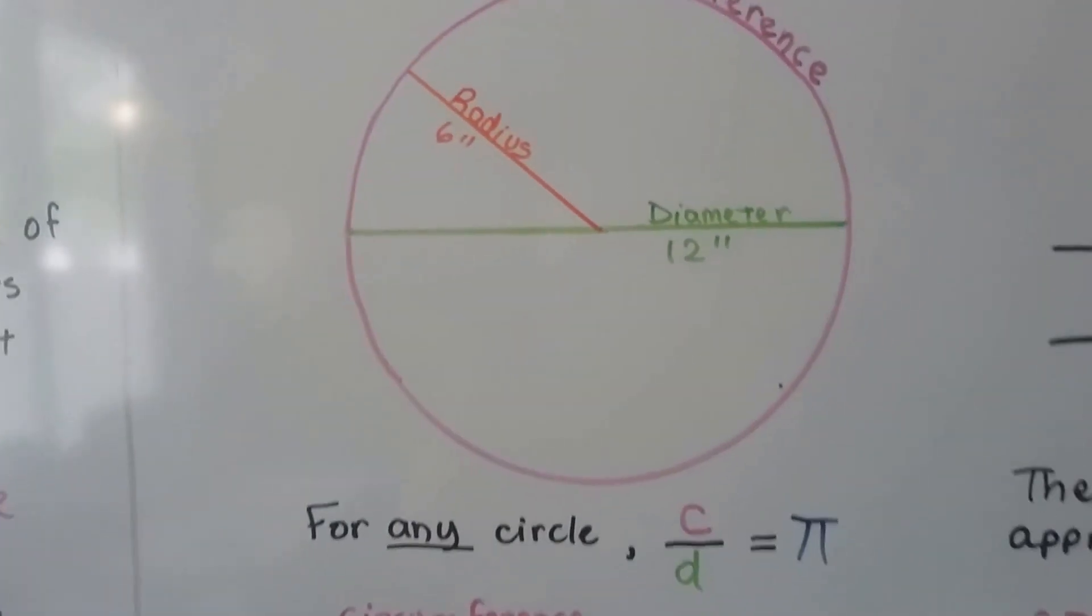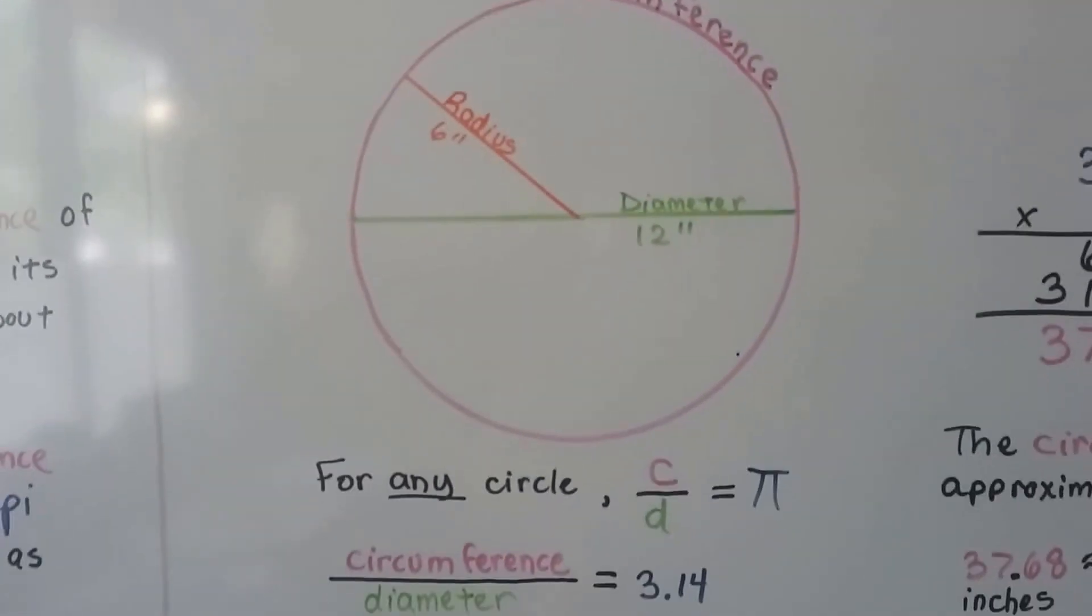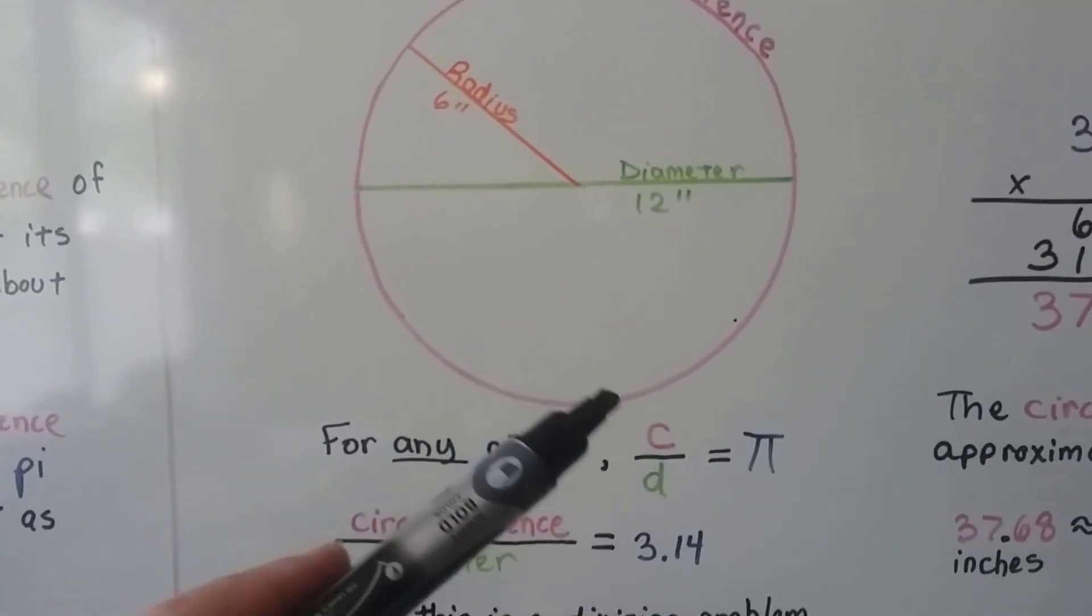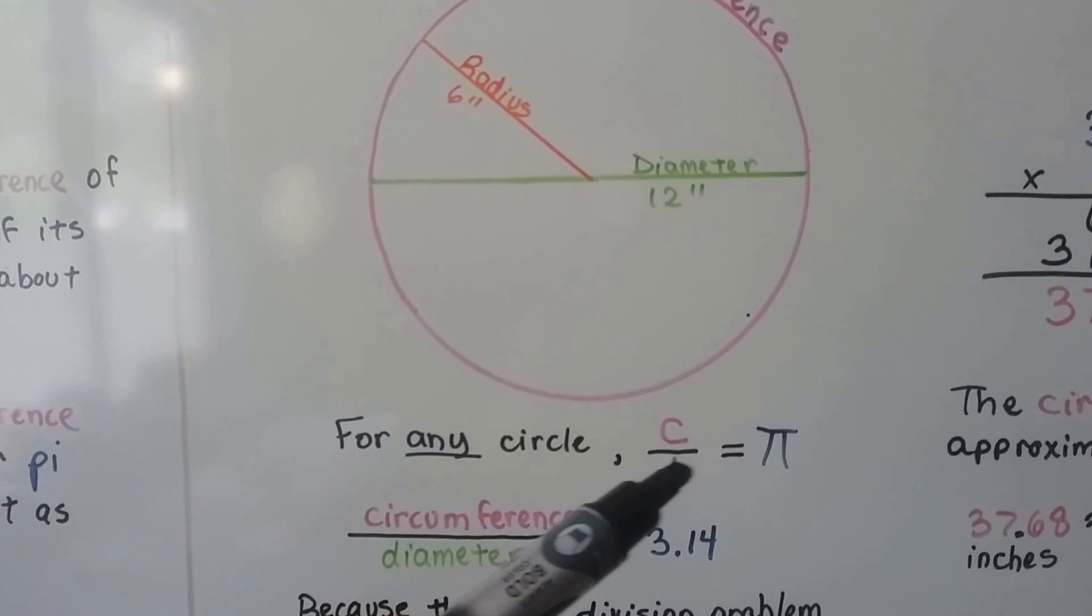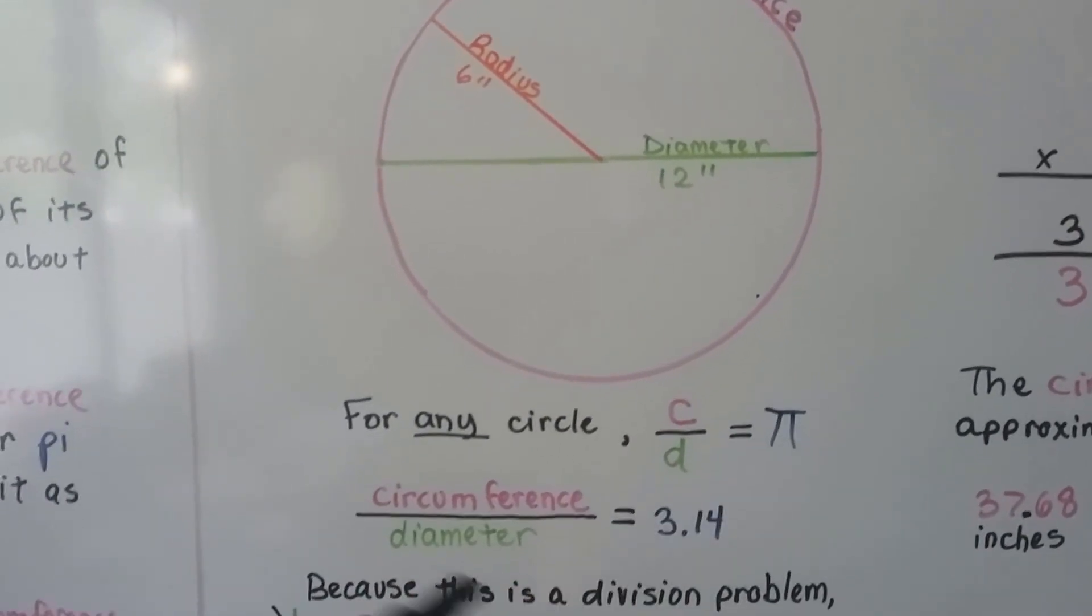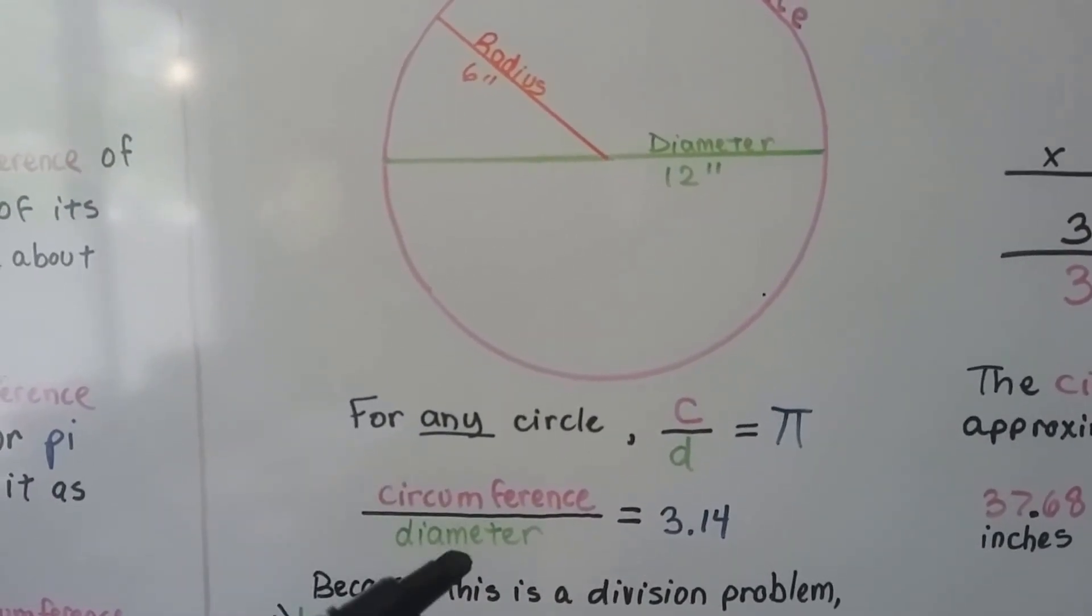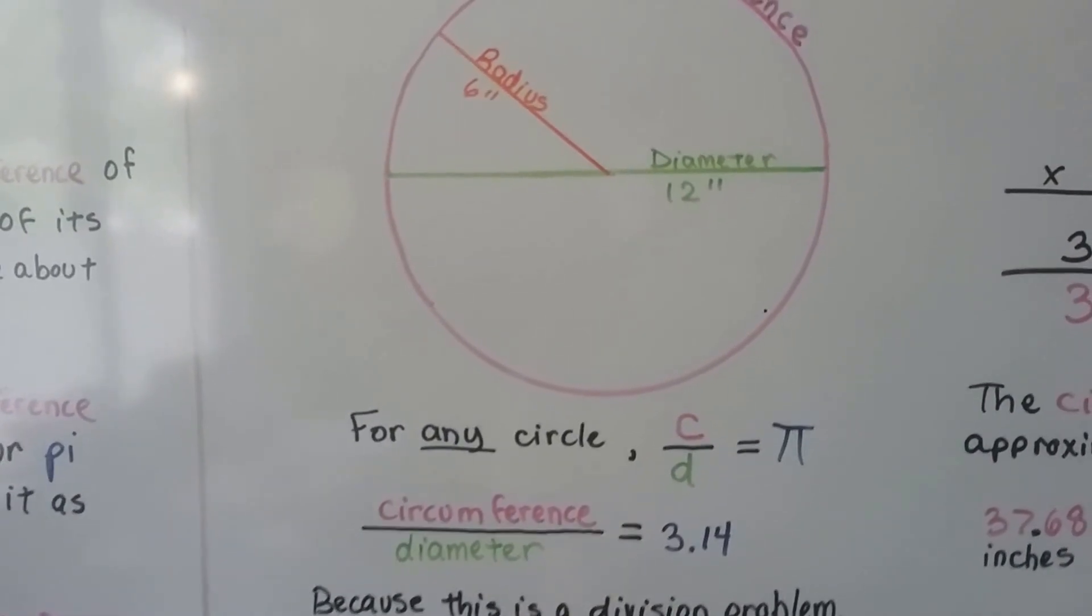So if you take a look at this, the diameter is 12. For any circle, c divided by d is going to equal pi. That means the circumference divided by the diameter is going to equal 3.14.